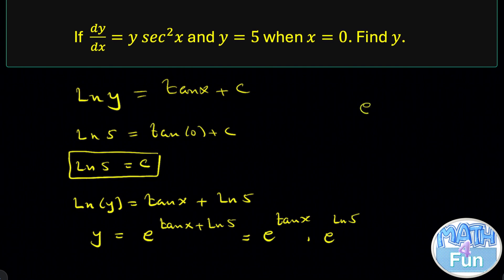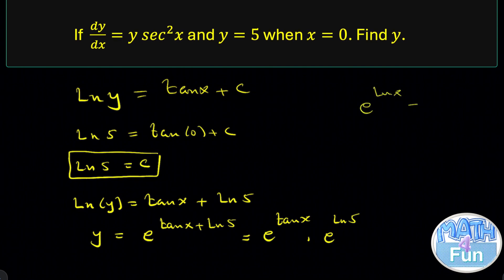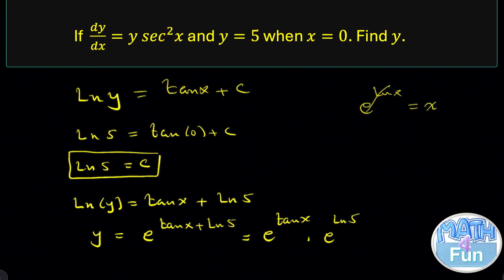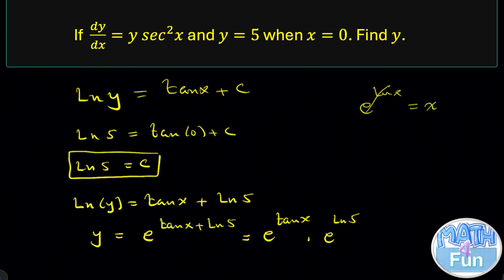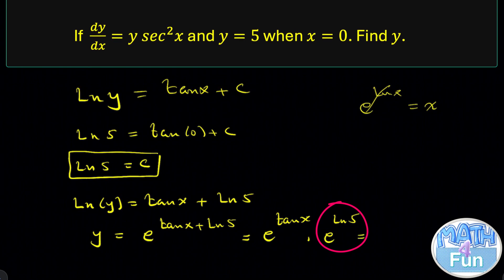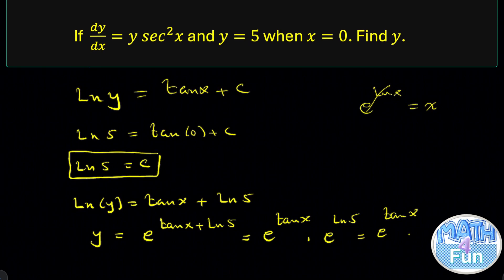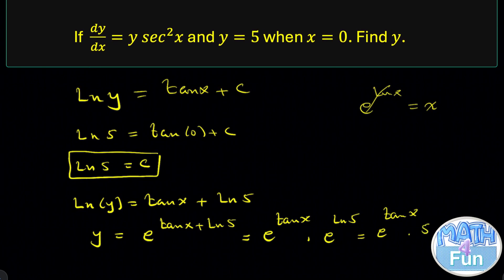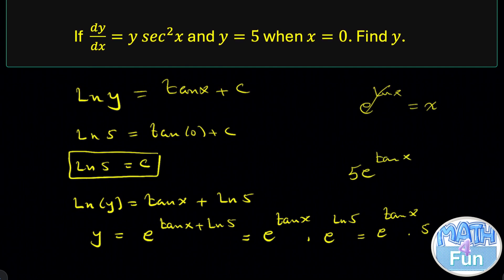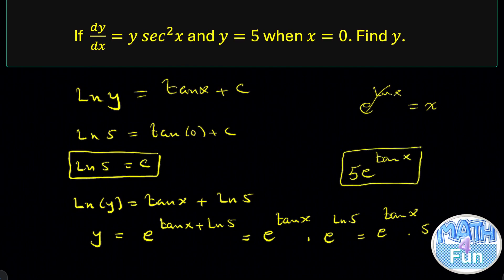And also, you know when we have e^(ln x), e and ln cancel each other, so you can write it as x. So now, e^(ln 5) can be replaced by 5. Then, e^(tan x) times e^(ln 5) is 5. And finally, it gives you 5e^(tan x). And that is the final answer.